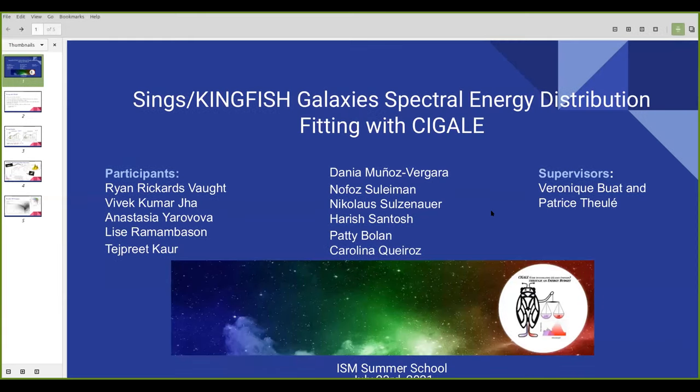On this slide you can see the participants of the project. We did it with our supervisors, and our main aim was to use CIGALE code to derive the model spectra of galaxies and to get some parameters of these models to make some characteristic plots. My colleagues will tell you more details about the project.